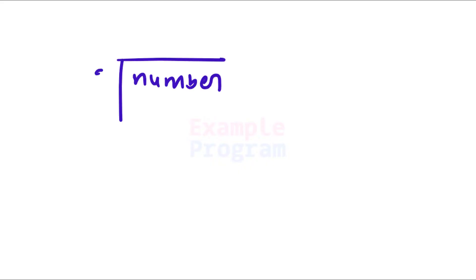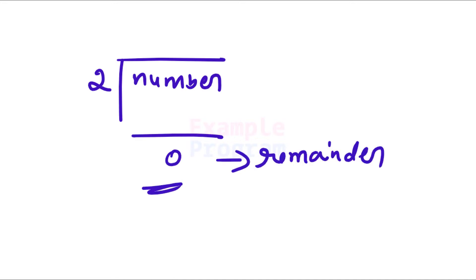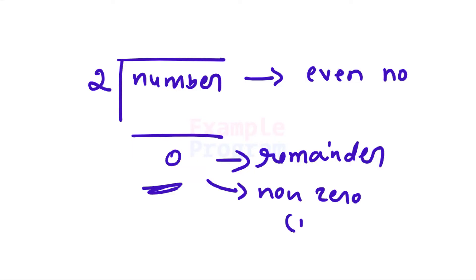Now how can we say that a number is even or odd? All you have to do is take the number and divide it by 2. If you get the remainder 0, then this number is said to be an even number. If the remainder is a non-zero value, which is 1, then this number is said to be an odd number.